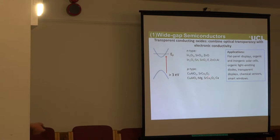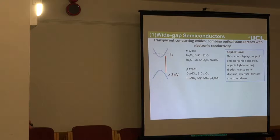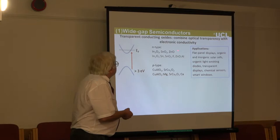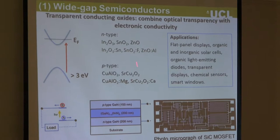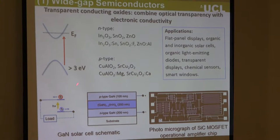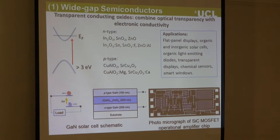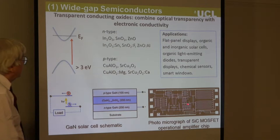Let's first look at defects in wide-bandgap semiconductors. These are really important materials, particularly transparent conducting oxides, which combine optical transparency with electronic conductivity, with a whole list of applications. We're going to look particularly at zinc oxide, and also at gallium nitride, which is widely used in solar cell applications, and thirdly at silicon carbide, which is important for applications but isn't a wide-bandgap system in the same sense.